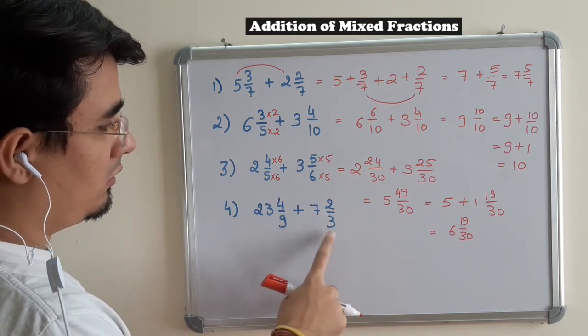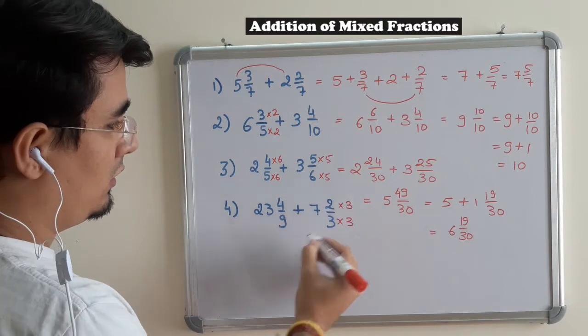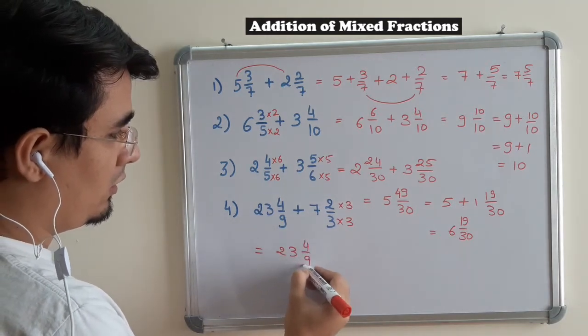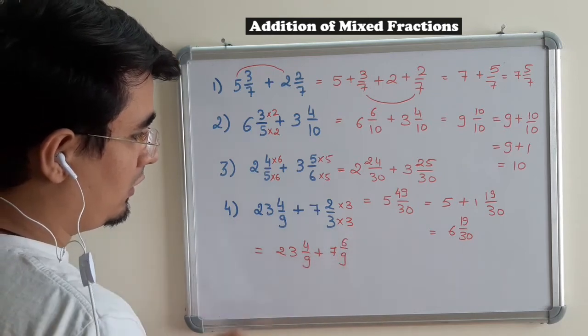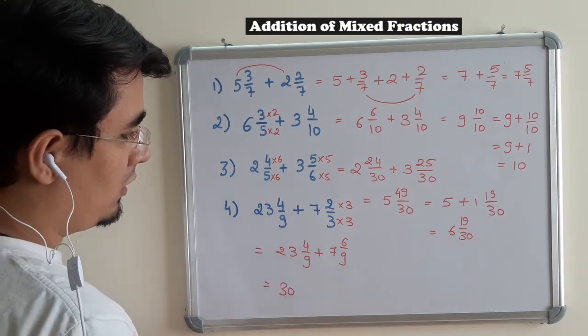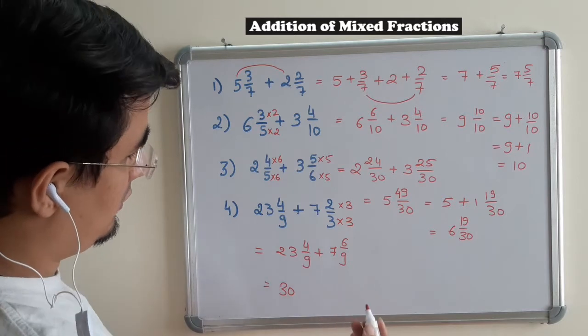In this case, 9 and 3. So LCM is 9. I will multiply this number by 3. It will be 23, 4 by 9, 7, 6 by 9. So 23 plus 7 is 30, and 4 plus 6 is 10 by 9.